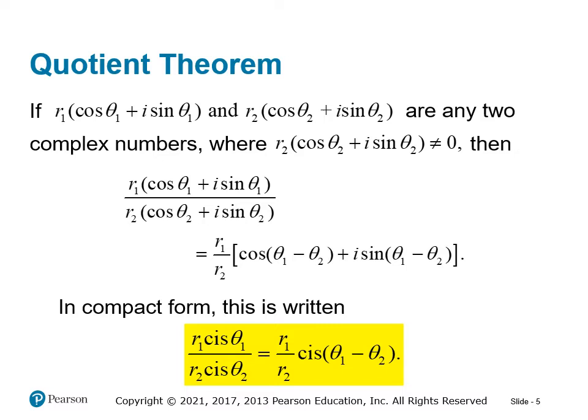So now let's look at the quotient theorem. The quotient theorem is very similar. If we're dividing two complex numbers in polar form, it's very similar to the product theorem, except instead of multiplying the magnitudes, we're going to divide them. And instead of adding the angles, we're going to subtract them. So the bottom in yellow is what you want to focus on. Dividing the magnitudes and subtracting the angles.